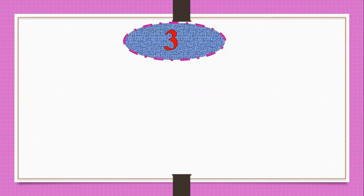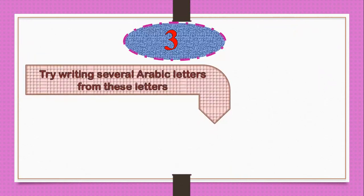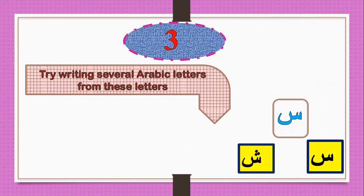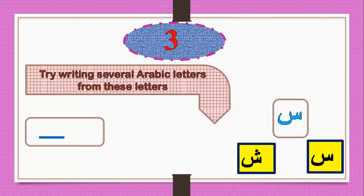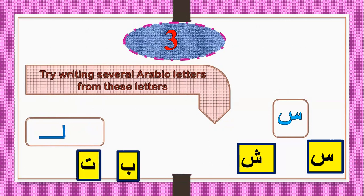Let's go to the third type of questions: try writing several Arabic letters from these letters. Can you write several Arabic letters from Sin? Yes — Sin and Shin. From the next letter, Ba: Ba has one dot, Ta has two dots, and Tha has three dots. Very good.